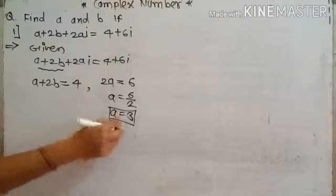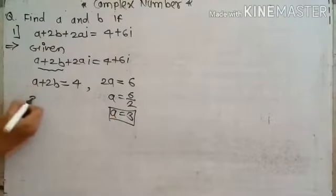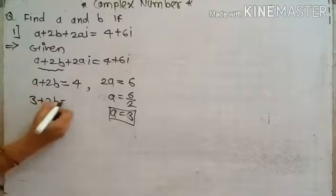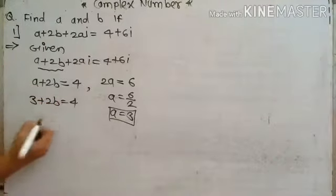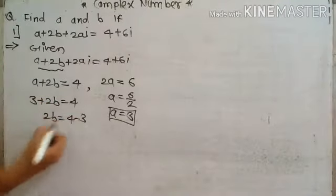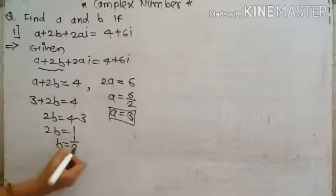Using the value of a, we find b by substituting into the first equation: 3 plus 2b is equal to 4. Then 2b is equal to 4 minus 3, that is 2b is equal to 1, and therefore b is equal to 1 by 2.